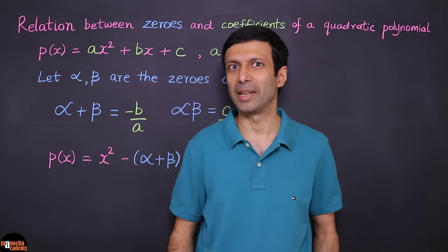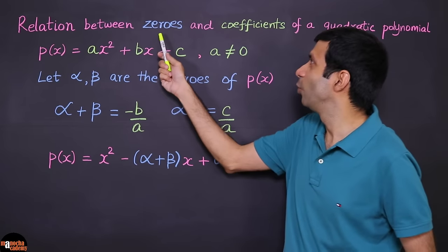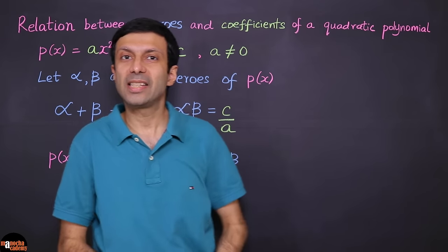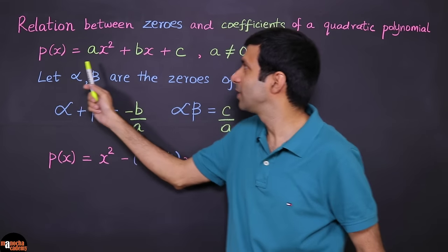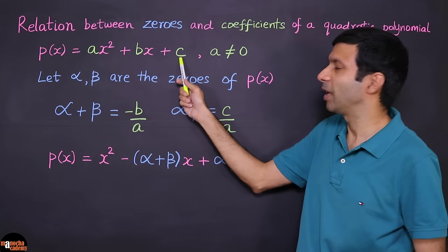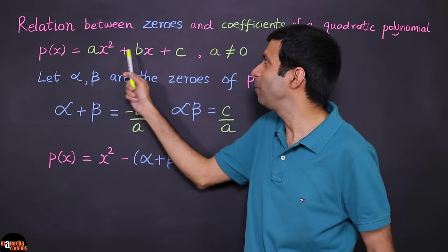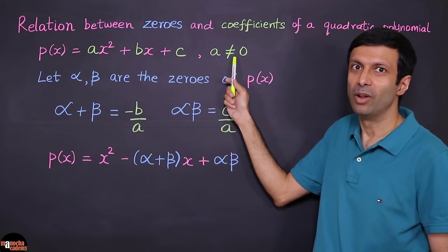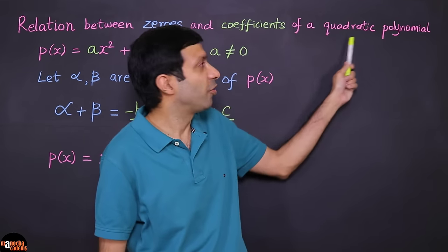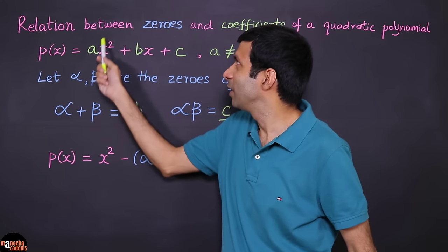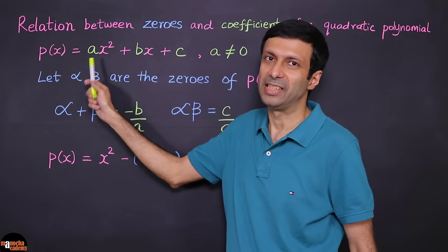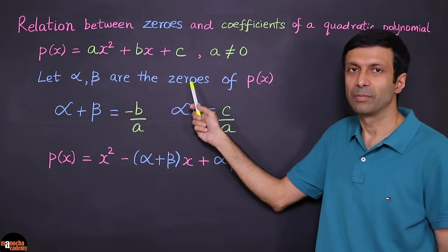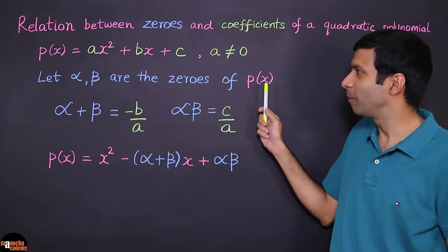Now let's look at the next concept: the relation between zeros and coefficients of a quadratic polynomial. Let's say our quadratic polynomial P(x) = Ax² + Bx + C, where the coefficients are A, B, and C, and the coefficient A is not equal to zero. We want a quadratic polynomial so we need that x² term — so A should not be zero. Let's say alpha and beta are the zeros or roots of the quadratic polynomial P(x).